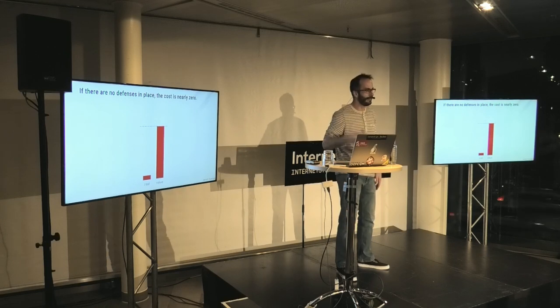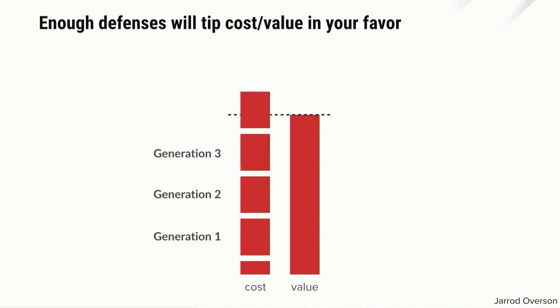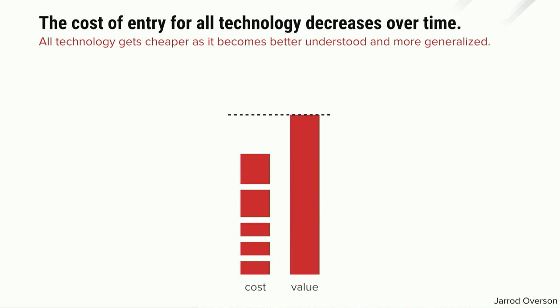As you add any sort of defense — a CAPTCHA, fingerprinting, whatever else — you increase the cost by forcing a generational shift for attackers. The goal is to add enough defenses so that the cost-to-value ratio tips in your favor. The problem is that once you reach that point, you feel pretty good, but as we've seen with mobile computing, AI, cloud, and literally any technology, by doing nothing, the cost of entry to those generations decreases over time as things become more generalized and optimized for common use cases.